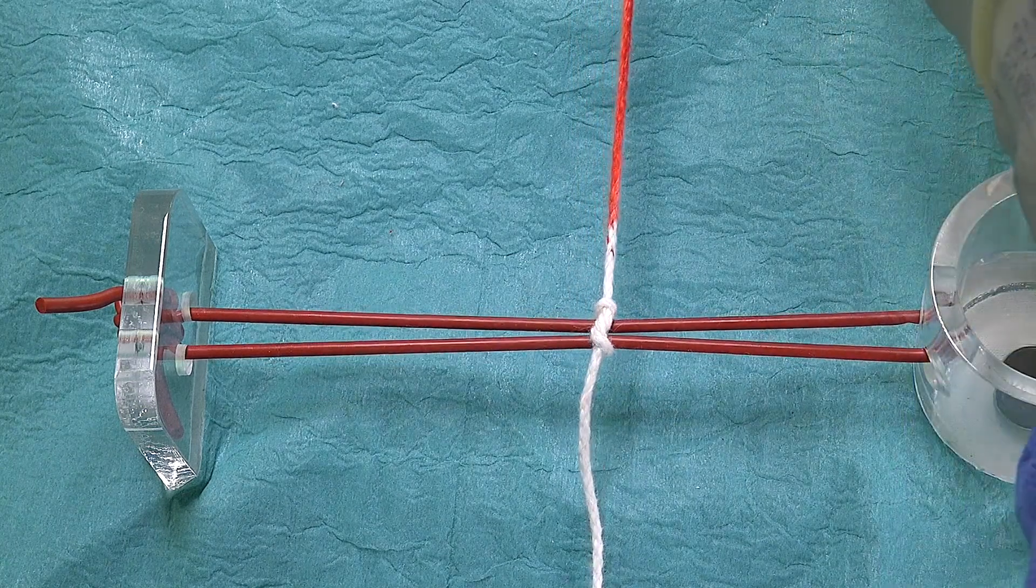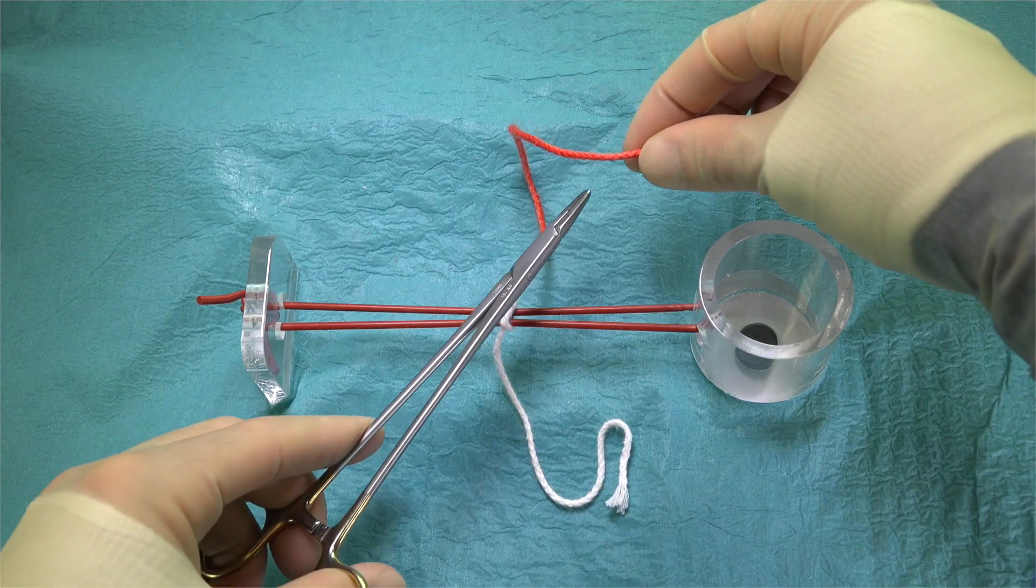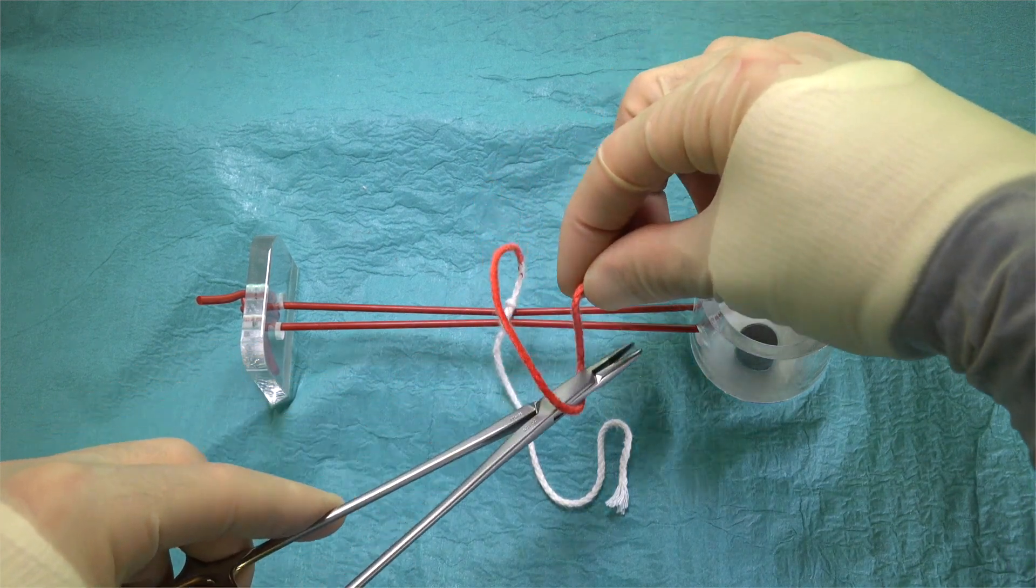The needle holder is again positioned horizontally, lying over the suture. The right hand then loops the suture that lies away from us, over and around the instrument once.